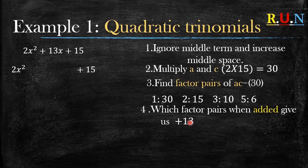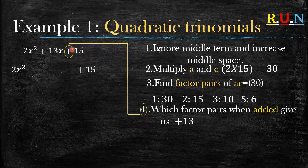Rule number four: ask yourself which factor pairs when added give us positive 13. We're talking about b, which is our second term, a positive 13. We use addition because the sign in front of c is an addition sign.